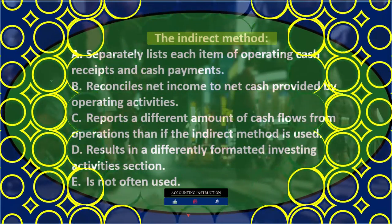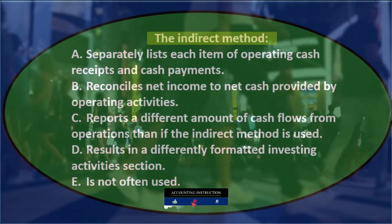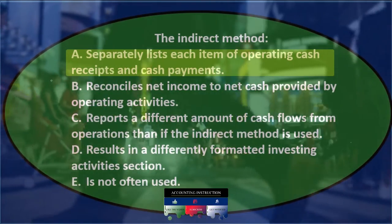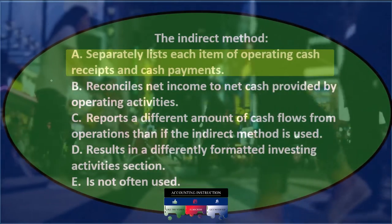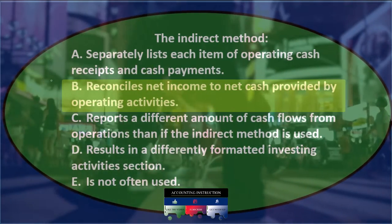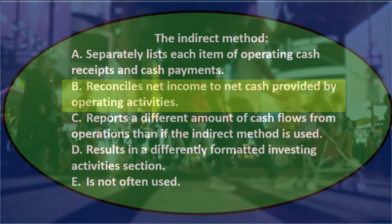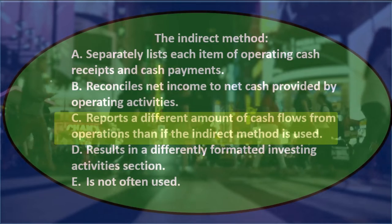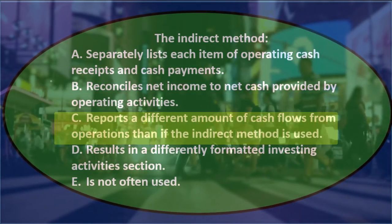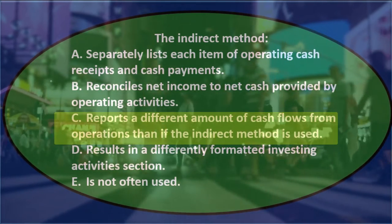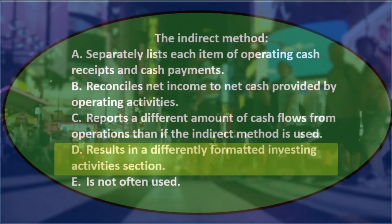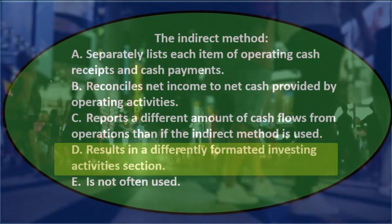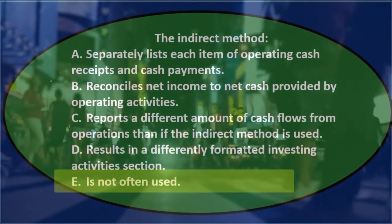Next question: the indirect method — A) separately lists each item of operating cash receipts and cash payments, B) reconciles net income to net cash provided by operating activities, C) reports a different amount of cash flows from operations than if the indirect method is used, D) results in a differently formatted investing activities section, E) is not often used.